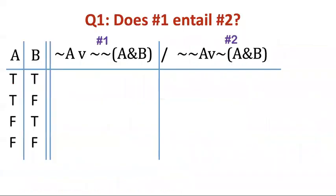All right, let's try an example to see if you can figure this out. Here are two sentences: not A or not not A and B. This is sentence number one. And the other sentence is not not A or not A and B. I put this little stroke here, the slash mark, in order to encode the information. This is like the horizontal line of an argument that means therefore.